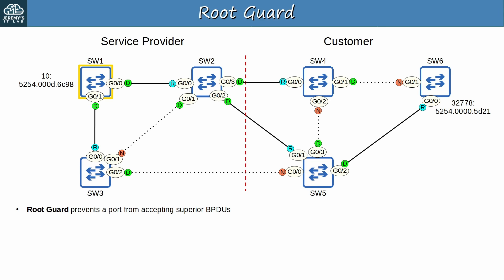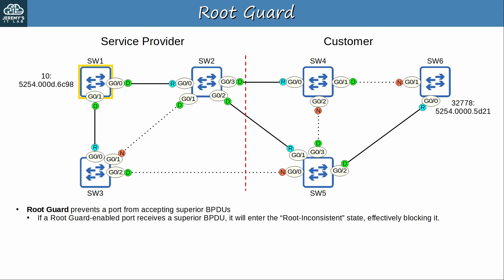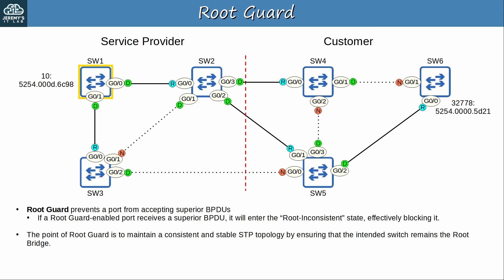RootGuard prevents a port from accepting superior BPDUs. If a RootGuard-enabled port receives a superior BPDU, it will enter the ROOT INCONSISTENT state, effectively blocking it. This is a bit different from being error-disabled, but the effect is the same — the port stops forwarding and receiving frames. The point of RootGuard is to maintain a consistent and stable STP topology by ensuring that the intended switch remains the root bridge.